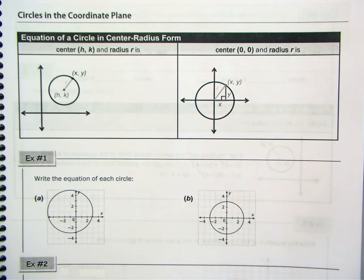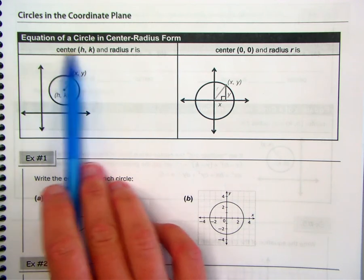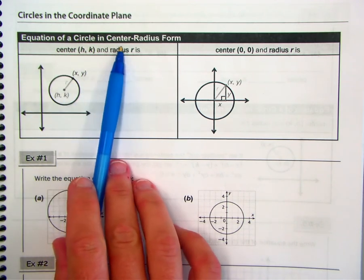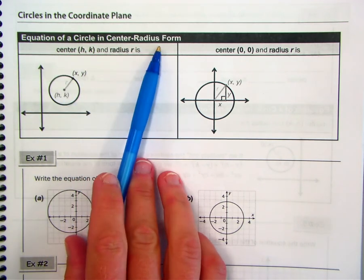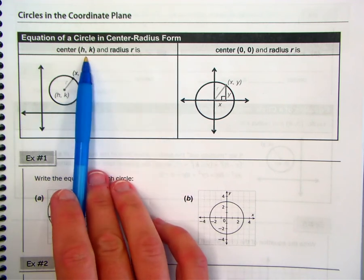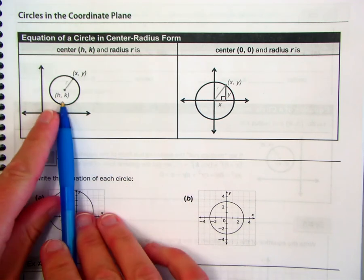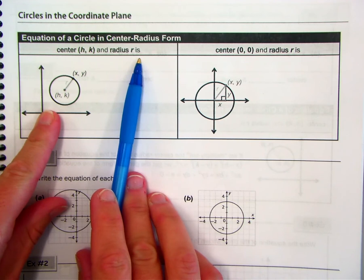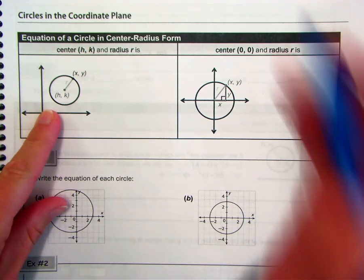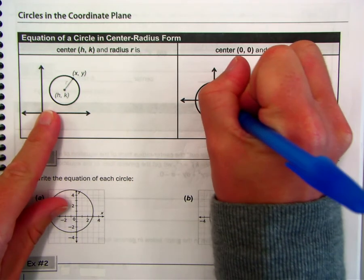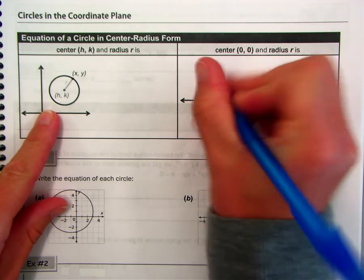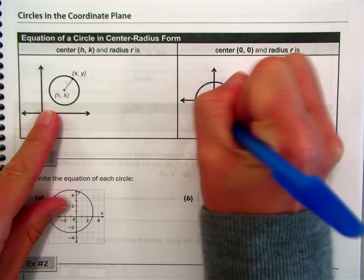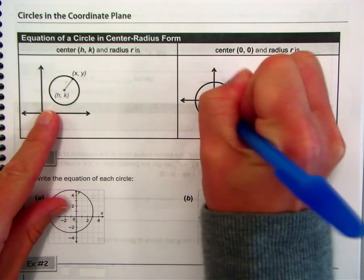So in today's notes, we're going to cover circles in the coordinate plane. The equation of a circle in center-radius form means we're given the center (h, k) and the radius r.